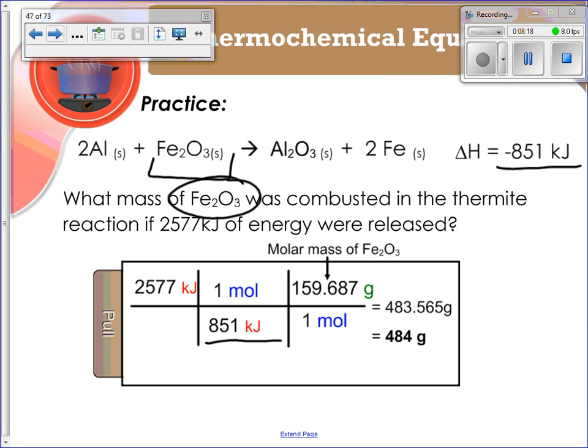And then for every 1 mole of that, we have 159.687 grams of Fe2O3. That's the molar mass of iron 3 oxide. And when we solve it out, we get 483.565 grams.